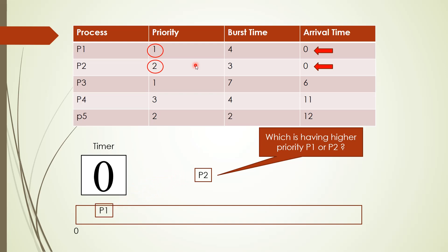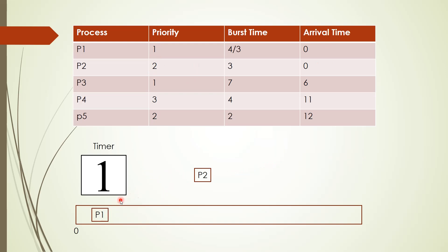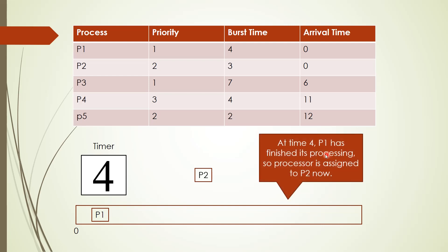In the Gantt chart, we put P1. In clock cycles 1 and 2, we have the same process P1. There is no new process arriving till clock cycle 6, so P1 needs 4 clock cycles and it will execute till clock cycle 4. P2 did not interrupt — that is why this is non-preemptive. P2 is not interrupting P1 while P1 is in execution. So P1 has finished its processing.